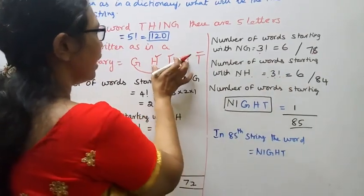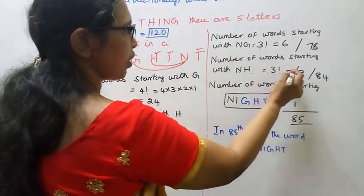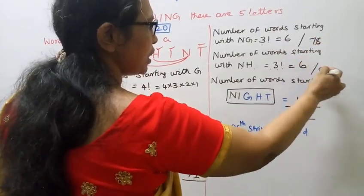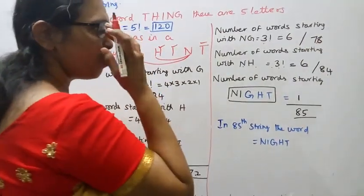NH gives 3 factorial equals 6. So 78 plus 6 equals 84. 84 total.